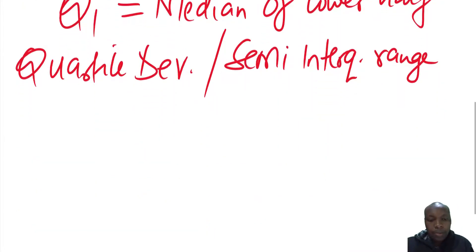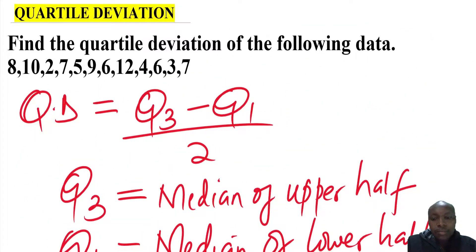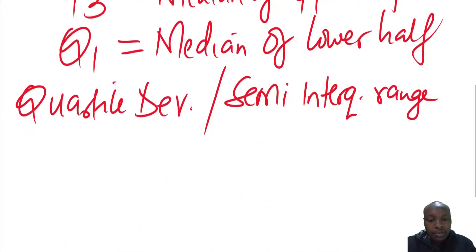So the first thing we're going to do is to divide this set of data, these values, from or in ascending or descending order. So you can choose to arrange in ascending or descending order. So let's arrange from the smallest to the biggest. That is ascending order.